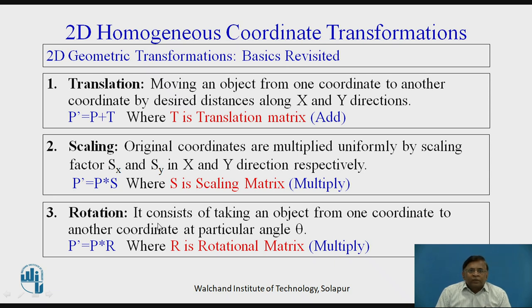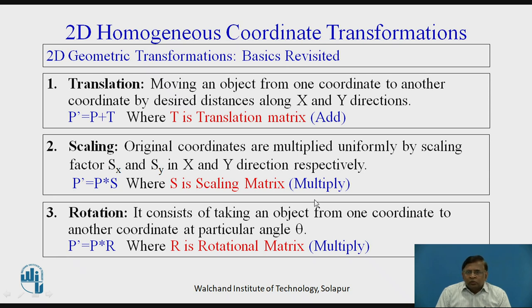Thirdly, rotation — we rotate the object about the origin by an angle theta. So the original point P is multiplied with the rotation matrix to get the new point coordinates. To compile: in translation we are adding the matrix, and in scaling and rotation we are multiplying the matrices.